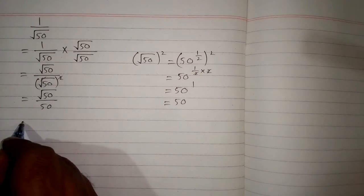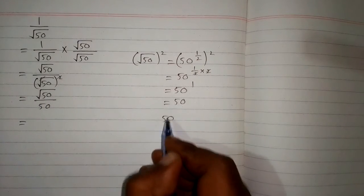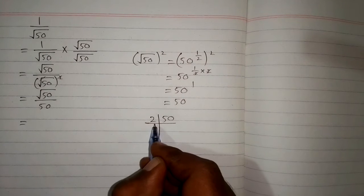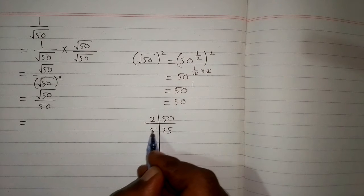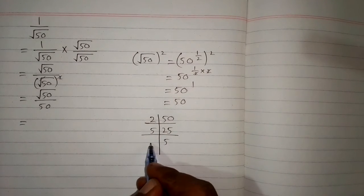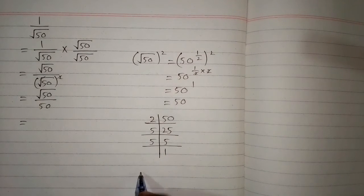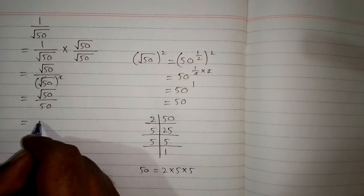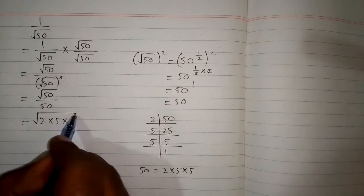Now we will further simplify square root of 50. For this we will factorize 50. First we divide by 2: 2 fives are 10, then divided by 5: 5 times 5 is 25, and again divided by 5 gives 1. So 50 can be written as 2 times 5 times 5. We write 2 times 5 times 5 in place of 50.